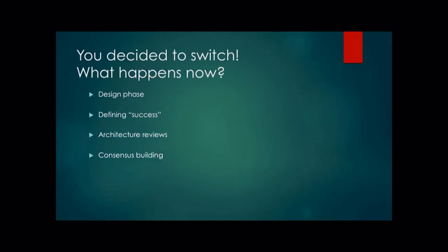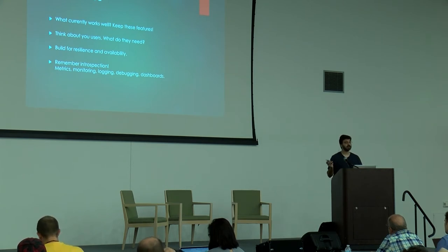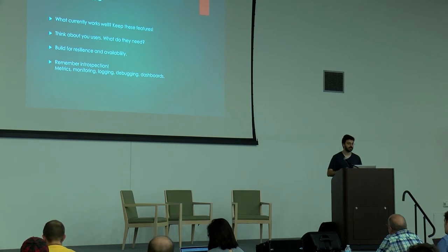So your first decision: does the new technology actually solve the problem? Let's say, hypothetically, it does, and you decide to switch. There are a couple of phases you need to go through to get to the point where you can do the deployment. The first one is the design phase. Figure out what currently works well with the software you have — you want to keep all of those bits. You don't want to get rid of everything wholesale. That might be your tooling, your metrics collection. You want to keep those good bits so you don't create more work for yourself. You need to think about your users: what do they actually want, how do they define success? You also need to build for resilience, and keep that introspection, metrics collection, and logging in mind during your design phase.